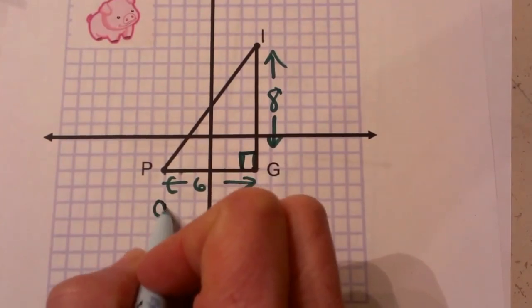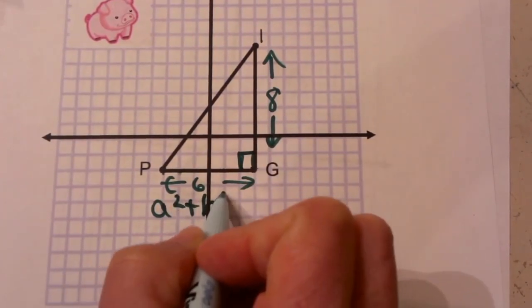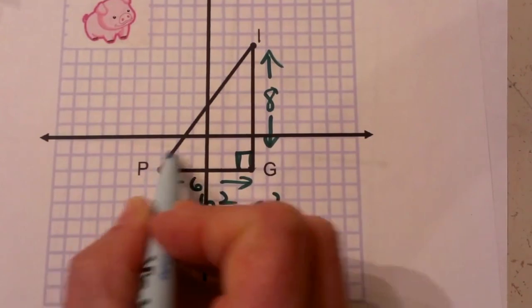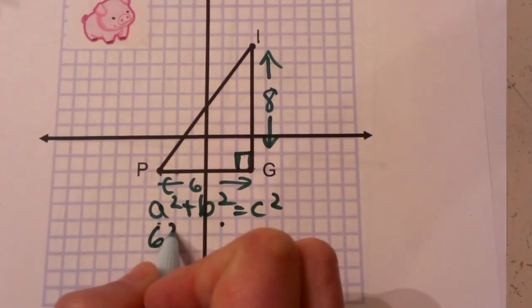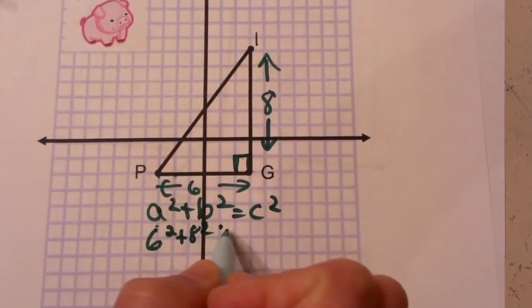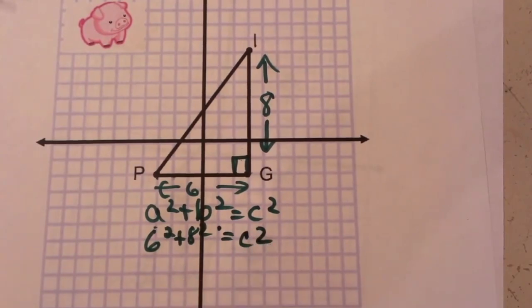A squared plus B squared equals C squared, where A and B are the two legs that we know. So that's going to be 6 squared plus 8 squared and we're going to set that equal to C squared.